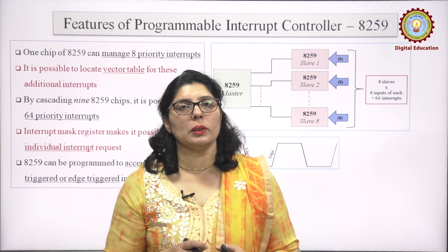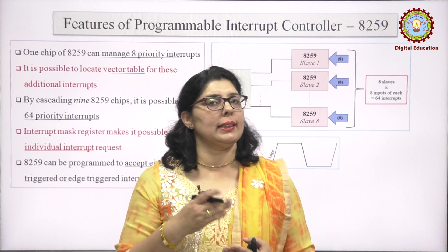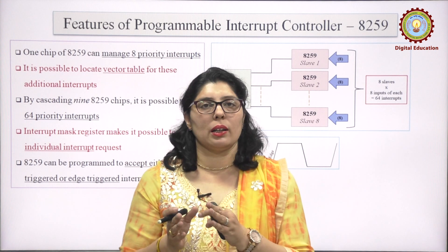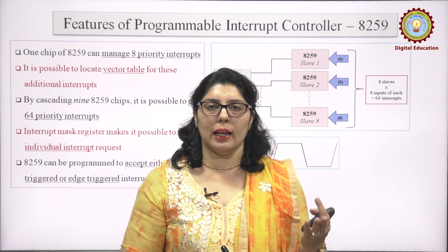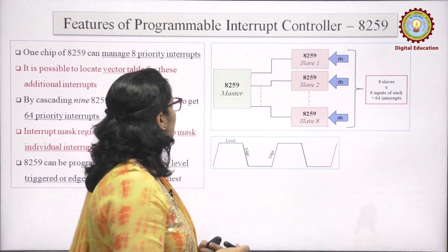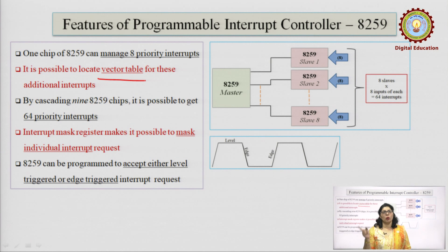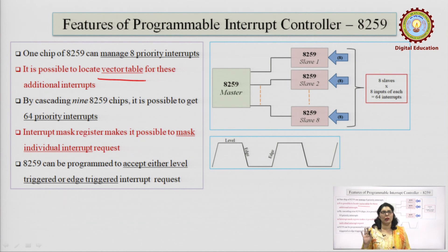All these interrupts are vectored. Vectored means we know the location where the interrupt service routine — the program — is saved in memory. That means we are talking about a vector table. 8259 has a vector table where it locates: if an interrupt is coming on pin number 1, what is its handler address; if it is on pin number 2, what is its address. So the addresses here are predefined and pre-located.